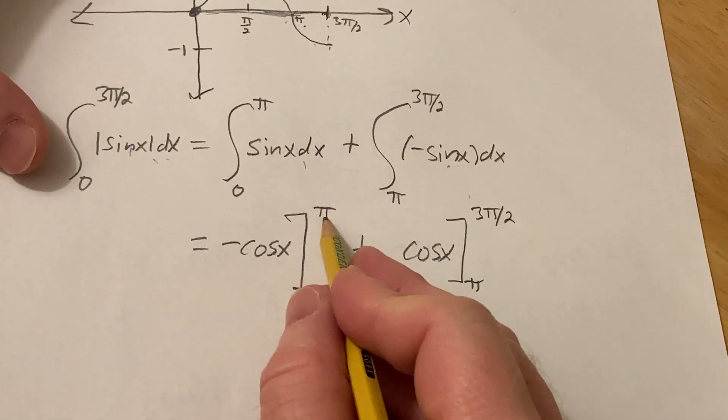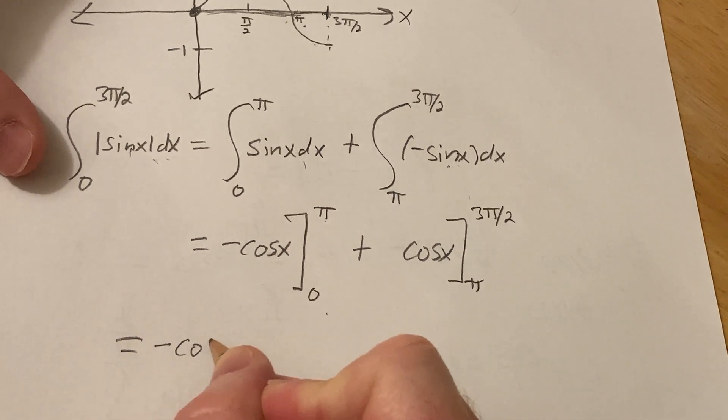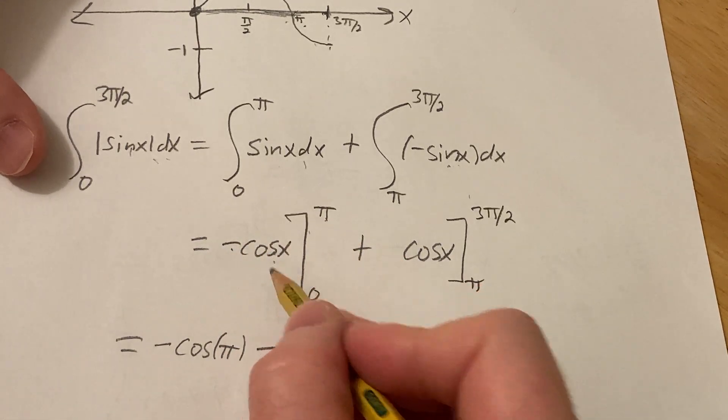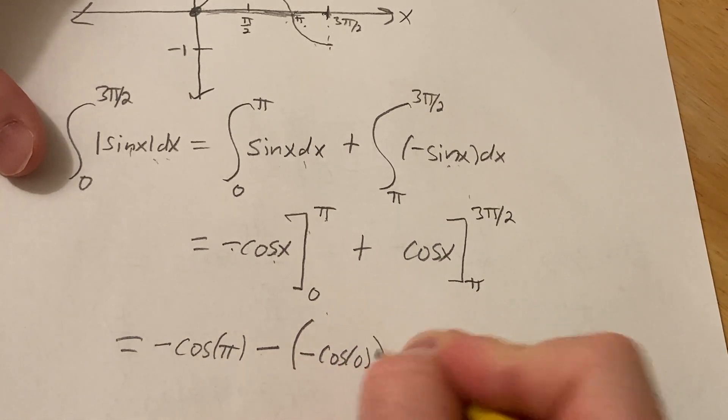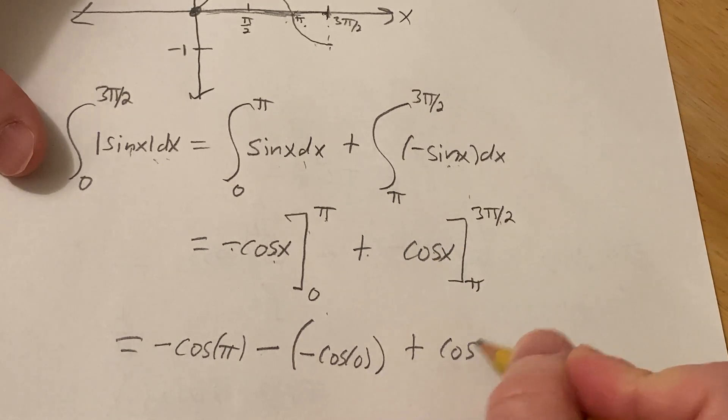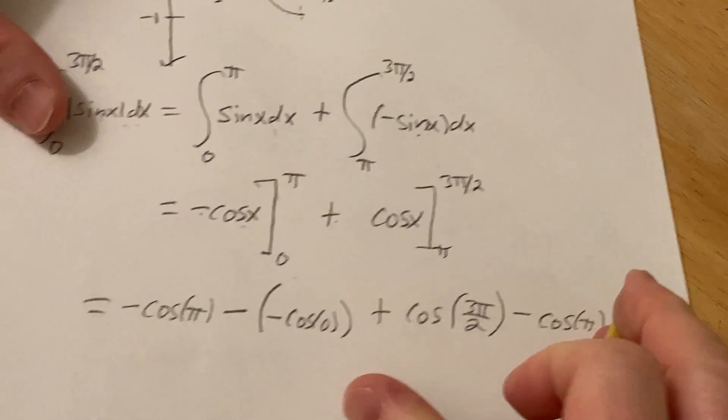Okay, so now we plug in this number, subtract, plug in this number. So this is going to be negative cosine of pi minus. And then the minus is from the formula, right? So you plug in minus parentheses negative cosine of 0. And plus, plug in 3 pi over 2, cosine 3 pi over 2. And then minus, and then plug in the pi, cosine of pi. Very nice.